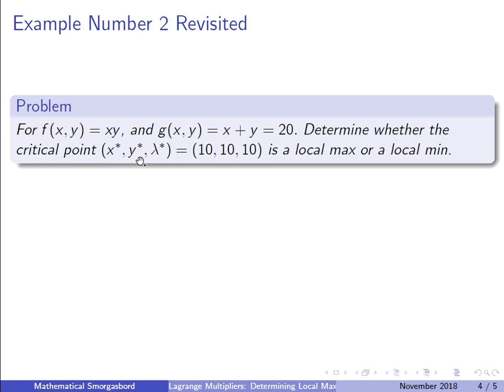But in that problem, what we found was that this occurs when x equals 10 and y equals 10. So then I just went back and solved for lambda, and lambda also equals 10. So this is the critical point that we want to test out, and we want to know whether this is a local maximum or a local minimum.